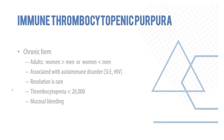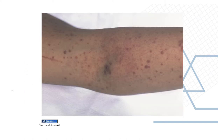The chronic form occurs more in adults, with women more affected than men. It is associated with autoimmune disorders like SLE or HIV, unlike the acute form. Resolution is rare in the chronic form, and it is usually associated with very low platelets of less than 20,000 and is commonly associated with mucosal bleeding.